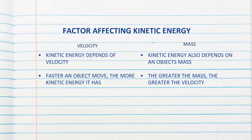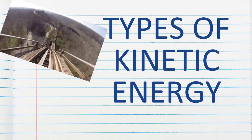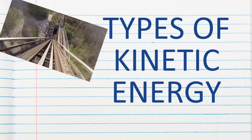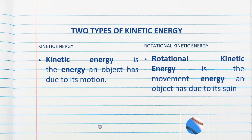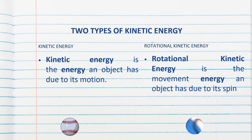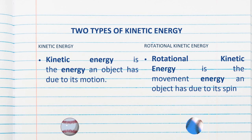If there are more than one type of energy, then there are more than one type of kinetic energy depending on its motion. There's kinetic energy, and then there's rotational kinetic energy. Kinetic energy is the energy of an object due to its motion — if it is moving at the same velocity, it will maintain its kinetic energy. As for rotational kinetic energy, it is the energy an object has due to its spin. As the name states, it rotates.